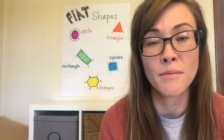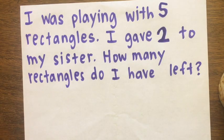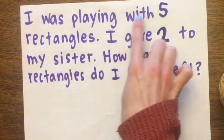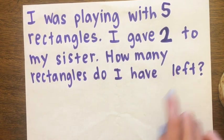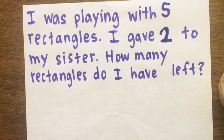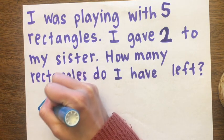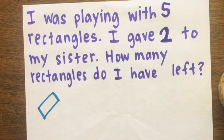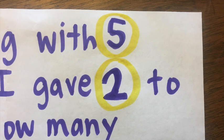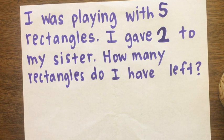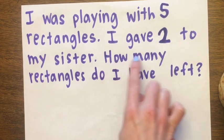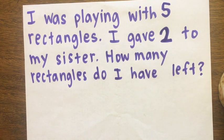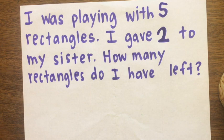Now let's try a math story problem together. Listen carefully. I was playing with five rectangles. I gave two to my sister. How many rectangles do I have left? It's about giving away rectangles. The numbers in the story are five and two. Draw a picture and write an equation to solve this problem on your paper.